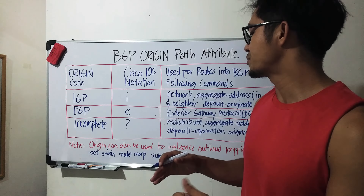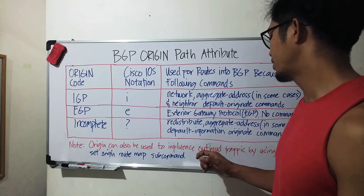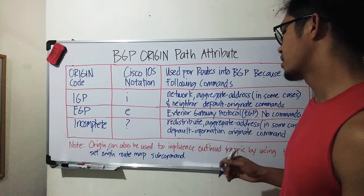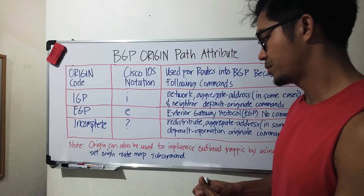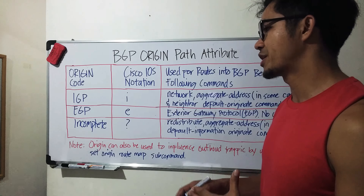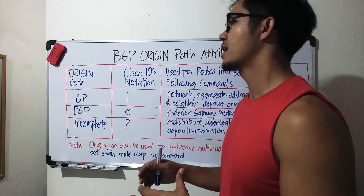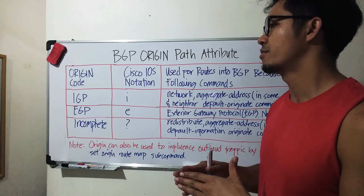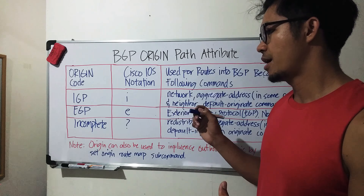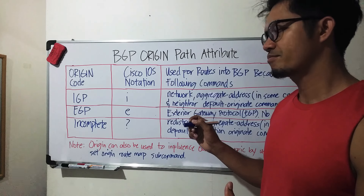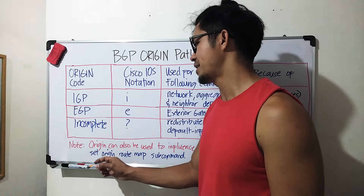Some people don't know this, but we can actually use origin to influence outbound traffic by using the 'set origin' route map sub-command. Basically, we define routes using an access list, call that access list from a route map, match the access list under the route map, and then use the 'set origin' command.